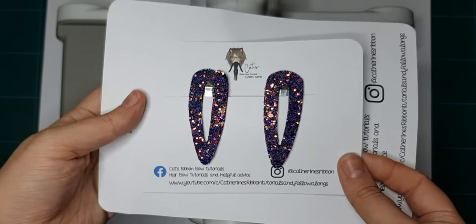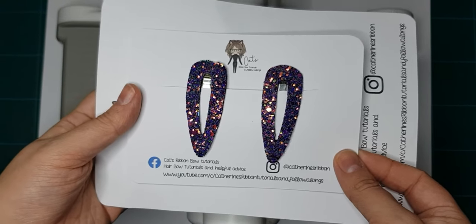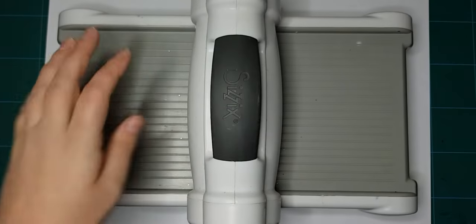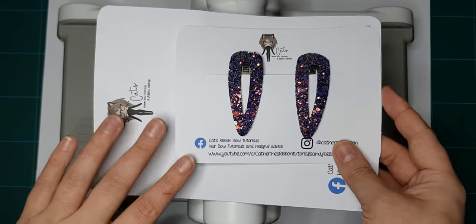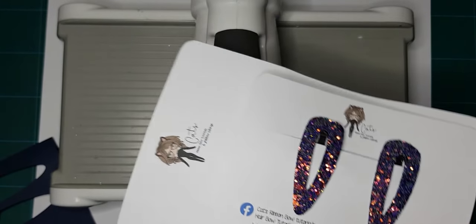Hi everyone, today I'm going to be showing you how to make these snap clips. I'm going to be using my Sizzix Big Shot machine today, and the die that I'm using is from Feltbetter, which is this one here.